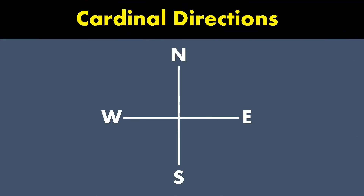In terms of cardinal directions, directional angles refer to the angles that a vector makes between two cardinal directions. The angle can be located between north and east, north and west, south and west, or between south and east.